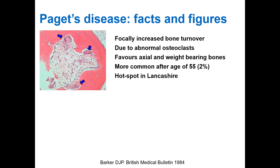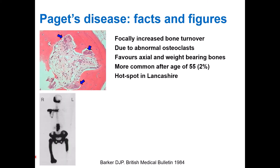Paget's disease is characterized by focal increased bone turnover or bone remodeling driven by abnormal osteoclasts, as seen on this biopsy from a patient with Paget's disease, where the osteoclasts indicated by the blue arrows are digging avidly into the bone — the dense pink tissue — followed by a string of osteoblasts. Paget's disease favors the axial and weight-bearing bones, as seen on this isotope bone scan, where we typically see involvement of the vertebrae, pelvis, whole right femur, proximal left femur, shoulder blade, and skull.